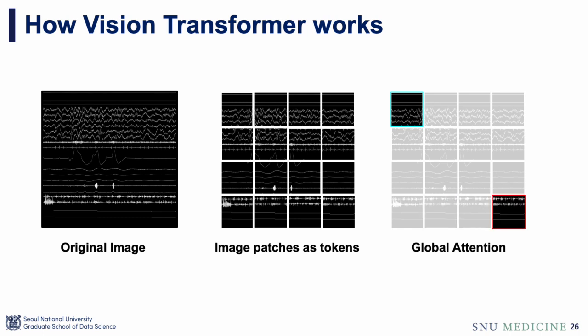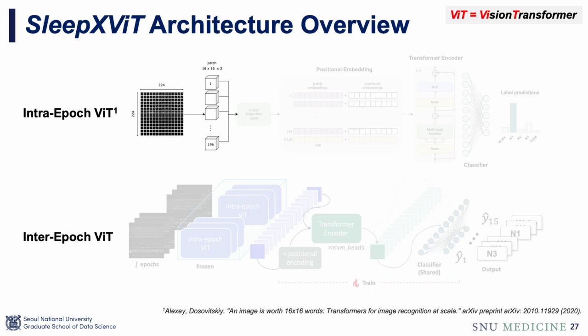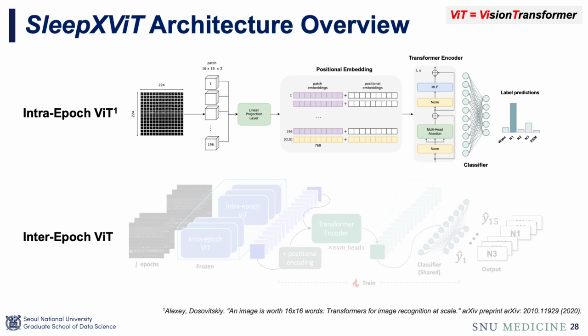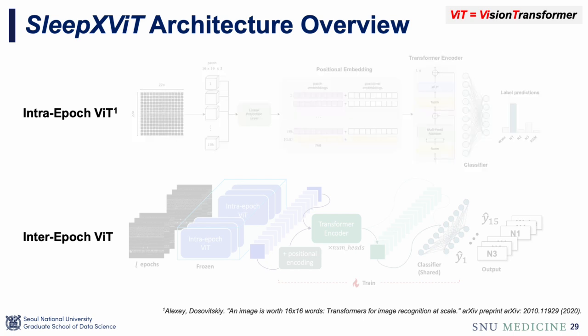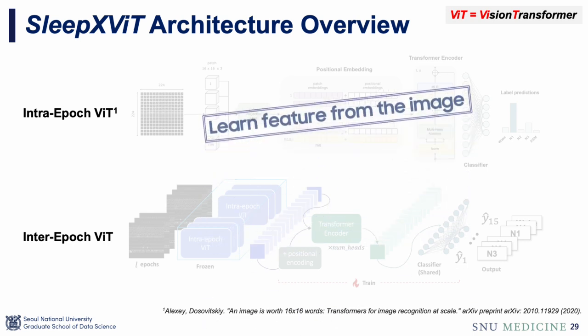This architecture is particularly suited to our image format. Unlike cat and dog images, our images have no clear distinction between object and background. We transform an image into a sequence of tokens, and these tokens along with positional embeddings are fed into a transformer encoder and classifier. After training, the intra-epoch VIT can extract features from the image.